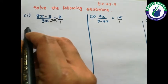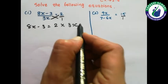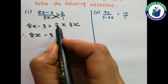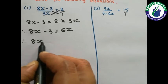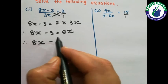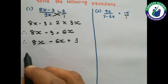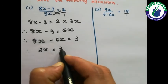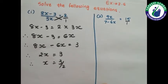So: 1 multiplied by (8x minus 3) equals 2 multiplied by 3x. That gives 8x minus 3 equals 6x. Bringing variables to one side: 8x minus 6x equals 3, so 2x equals 3. Therefore x equals 3 upon 2.